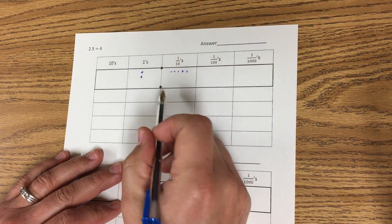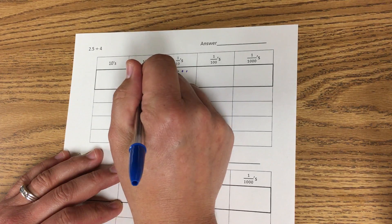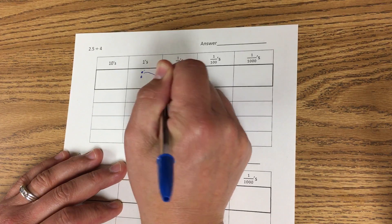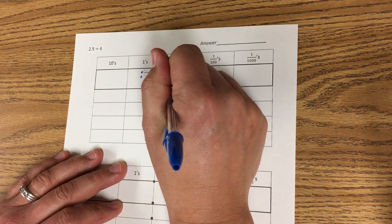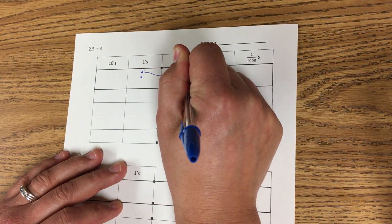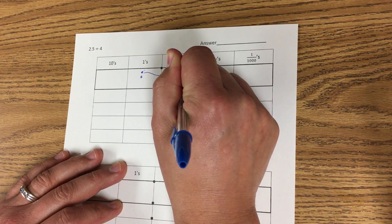So what I'm gonna have to do is I'm gonna have to change these ones into tenths. So I take the first one and I move it over here into tenths. Now 1 is 10 tenths. 1, 2, 3, 4, 5, 6, 7, 8, 9, 10. So I moved it over so I'm gonna cross it out.